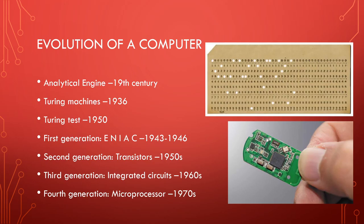Next, we go to the first generation: ENIAC — the Electronic Numerical Integrator and Computer, built in the 1940s. It used vacuum tubes and manual switches to process data. The first generation computer weighed almost 30 tons. This whole room would have been one computer. Your cell phone has more processing power than this entire room did back in the 1940s.